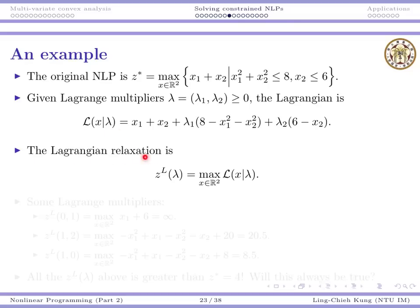The Lagrangian relaxation will be this one. We are still solving a maximization problem, but now there is no constraint. All the constraints have been put into the objective function. We define the optimized objective value given lambda as this zL(λ).